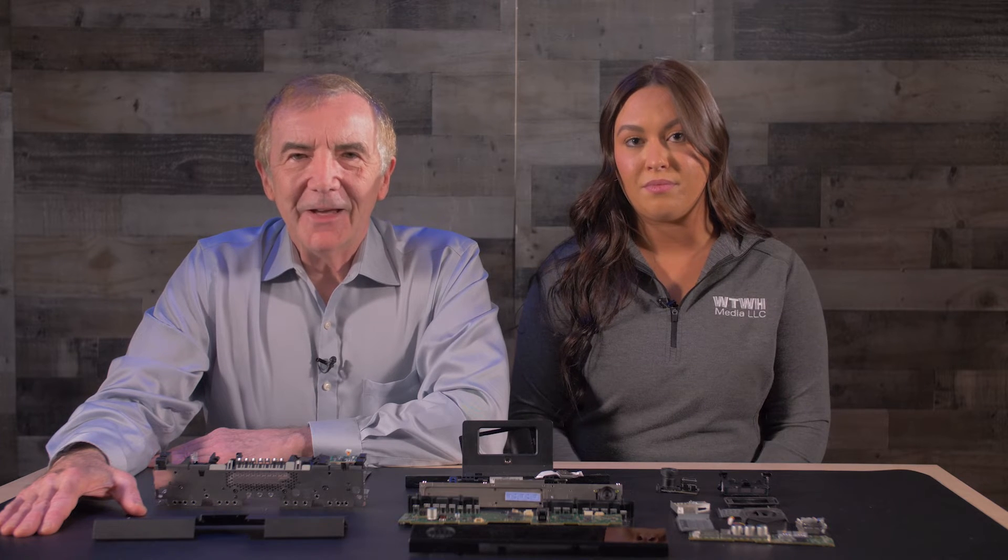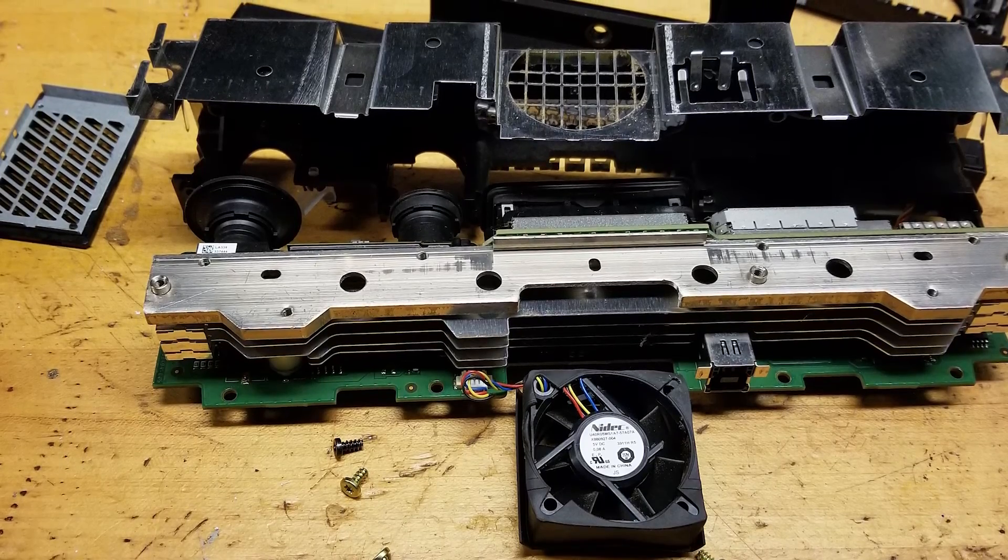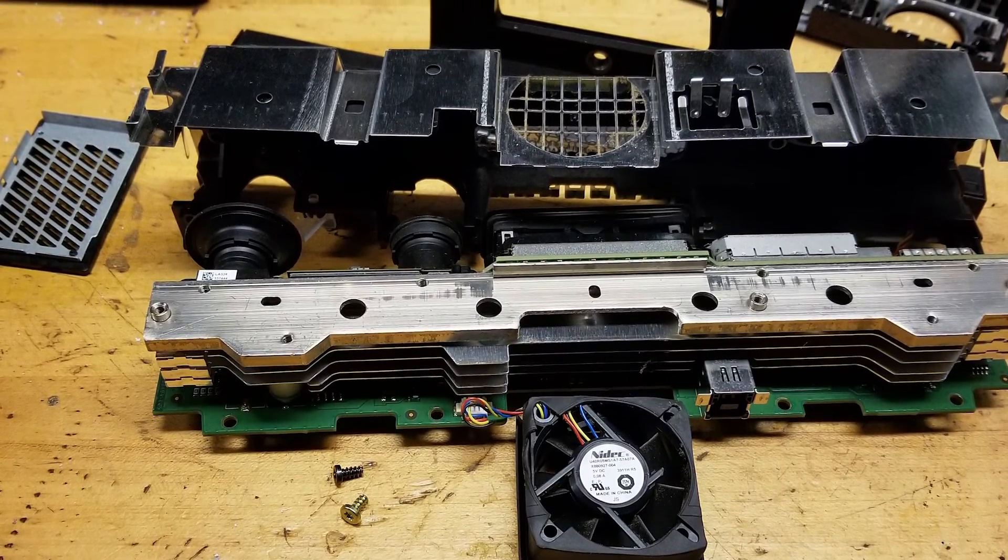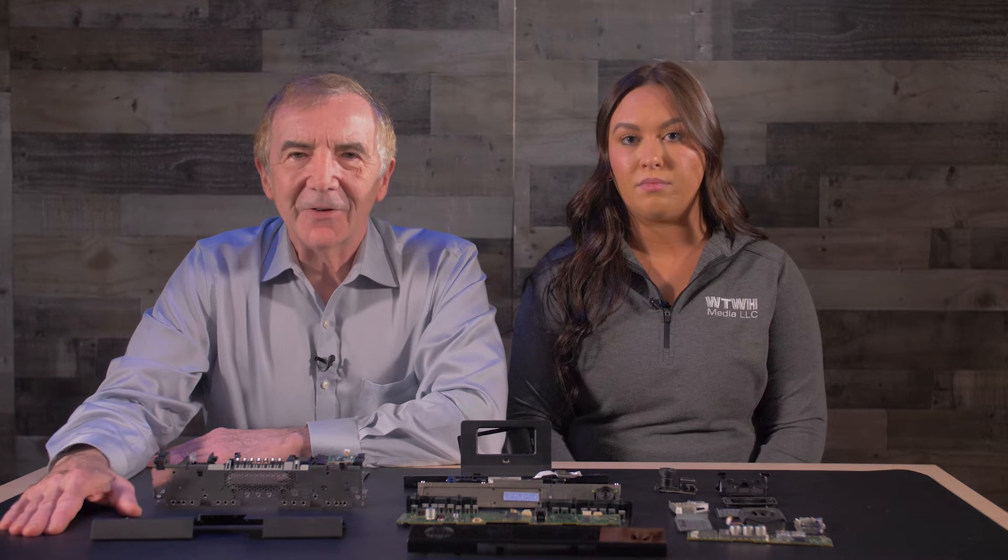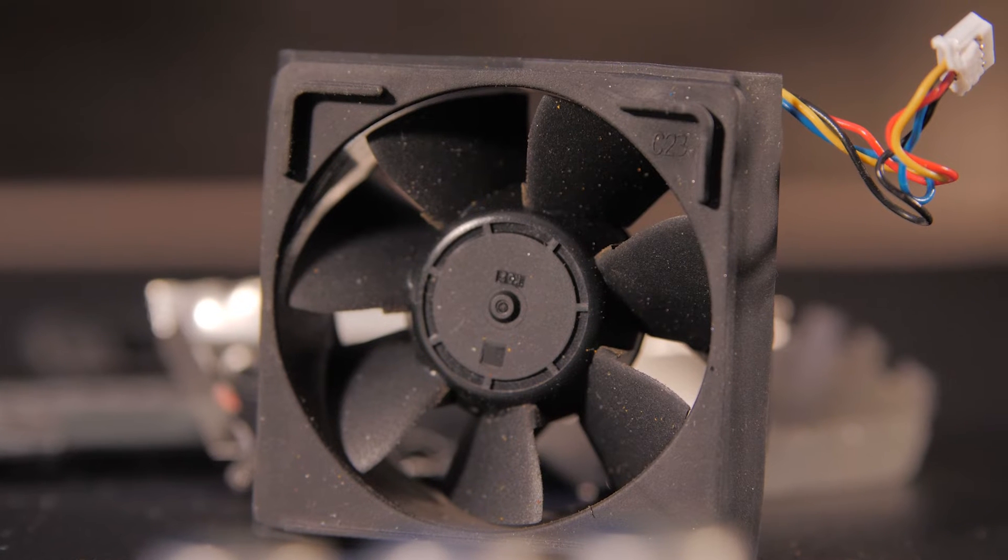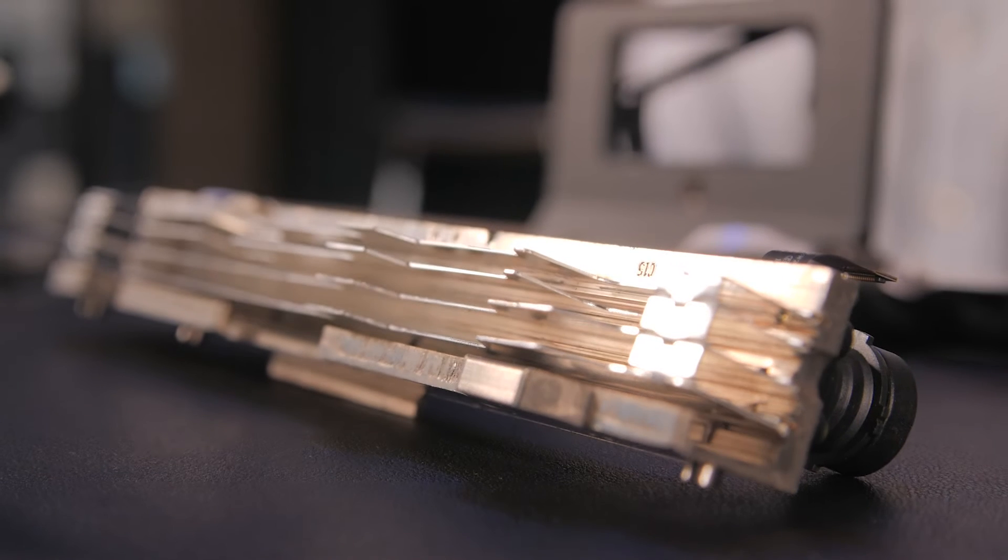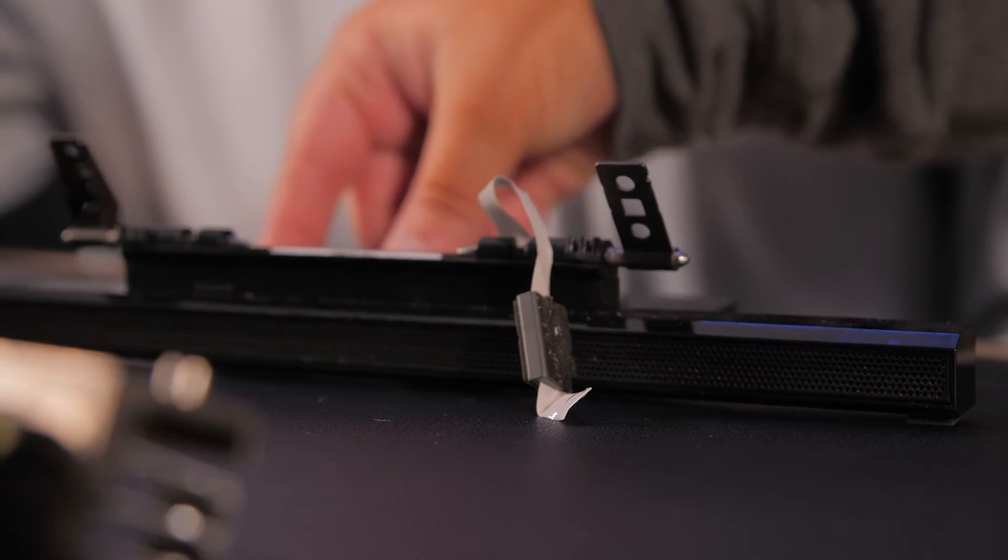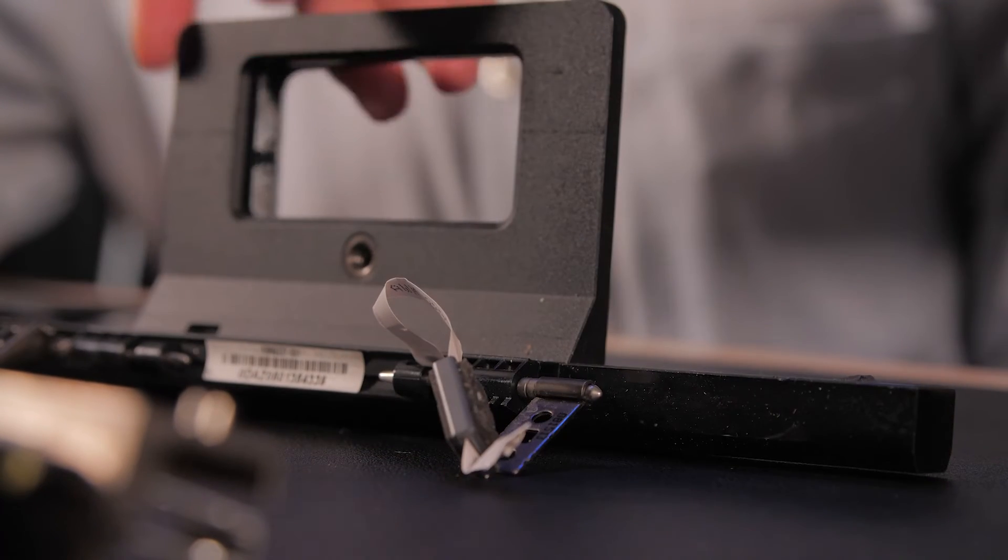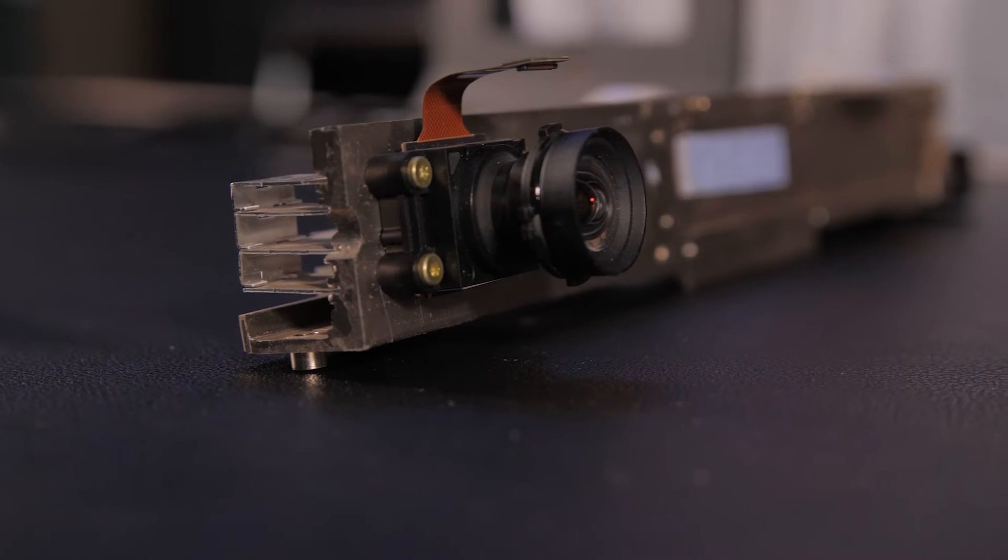The case comes off after removal of a few torque screws. The Kinect components, mainly the laser diodes, generate a lot of heat. So like the first version of the Kinect, the Kinect version 2 contains a 5-volt DC fan made by Nidec and a beefy metal heat sink that doubles as the frame to which most of the other Kinect components attach. That includes the stand which doubles as the housing for the microphone array the Kinect uses for voice commands.